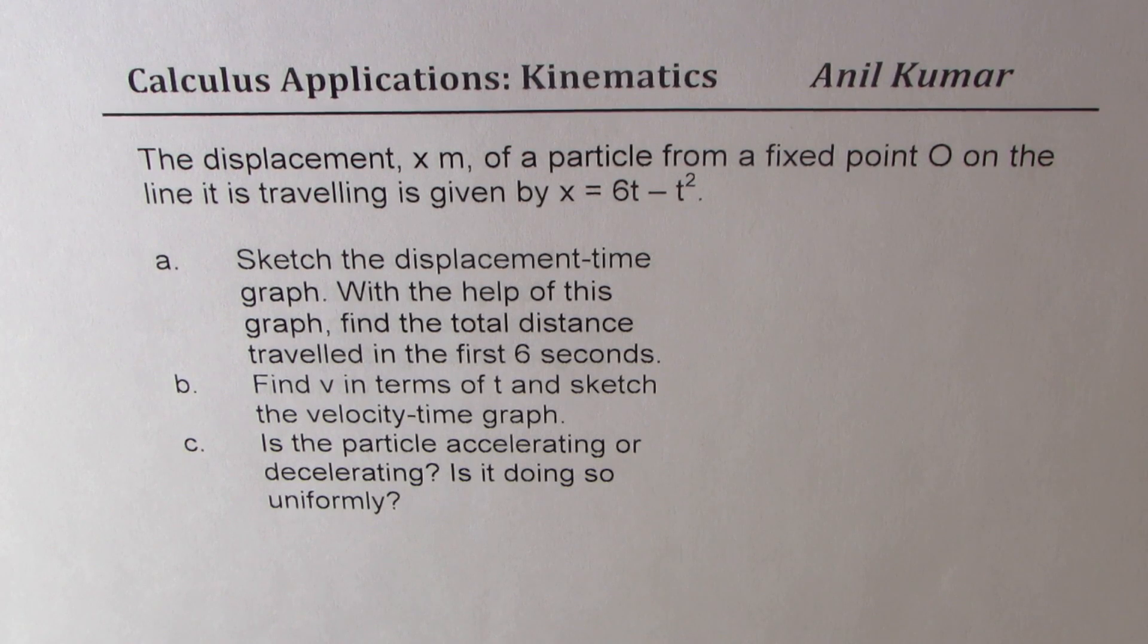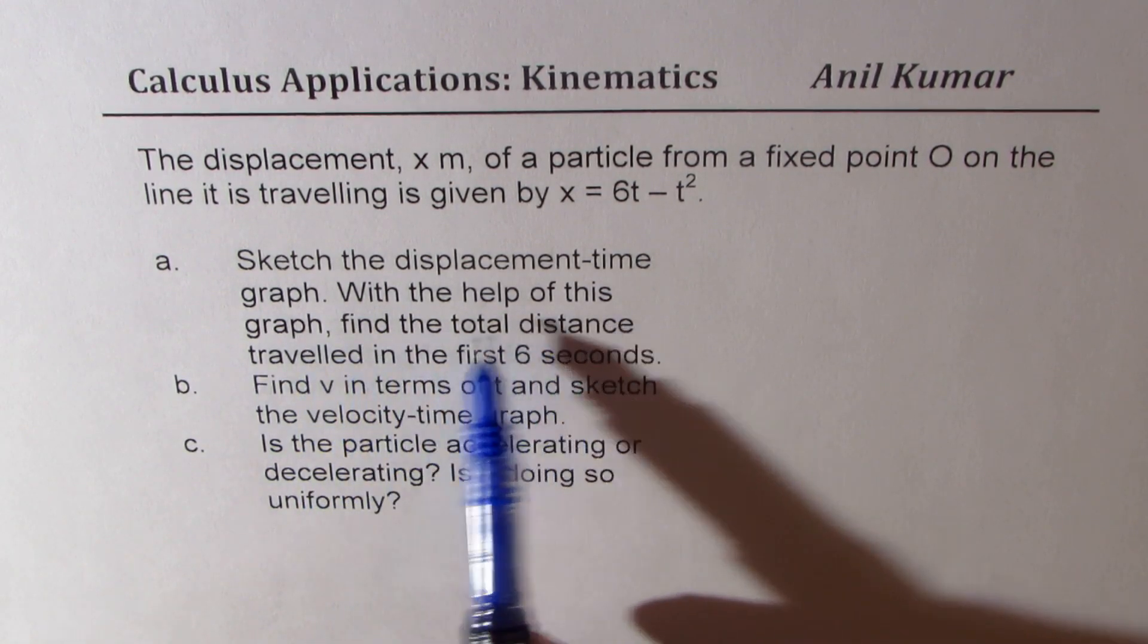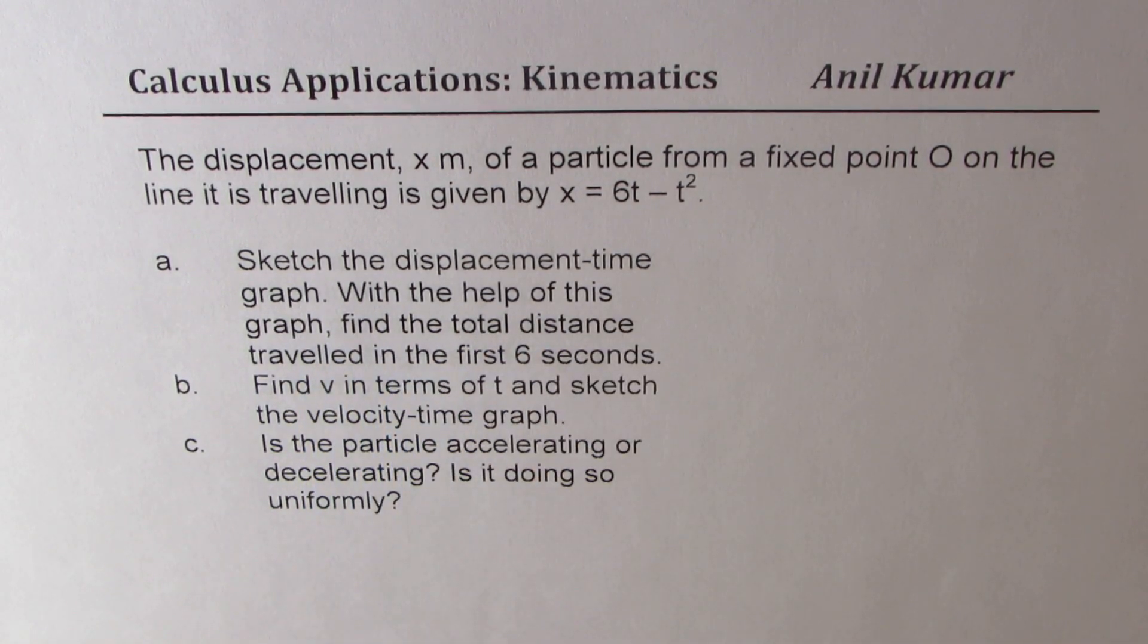The question here is, the displacement x in meters of a particle from a fixed point O on the line it is traveling is given by x equals 6t minus t squared. Sketch the displacement time graph. With the help of this graph, find the total distance traveled in the first 6 seconds.